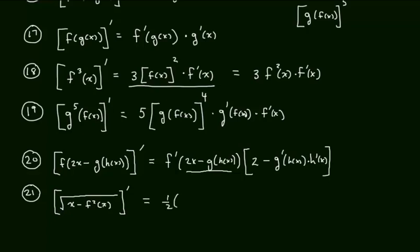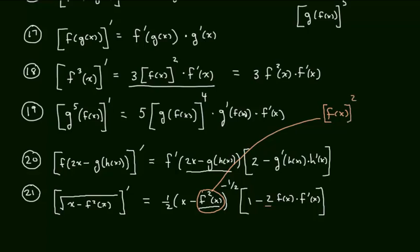1 half stuff to the negative 1 half power times. Okay, let's do this without having to rewrite it. 1 minus 2 f of x times f prime of x. Yay! We got it. If you didn't, it's okay. We'll get used to it. Just again, where did I go from there? Well, I did it in my head, but you could have said f of x to the power of 2. So that would have been 2.